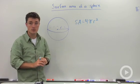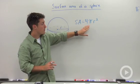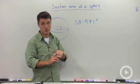So the only thing that you need to know in order to calculate the surface area of a sphere is this formula, four times pi times the radius squared.